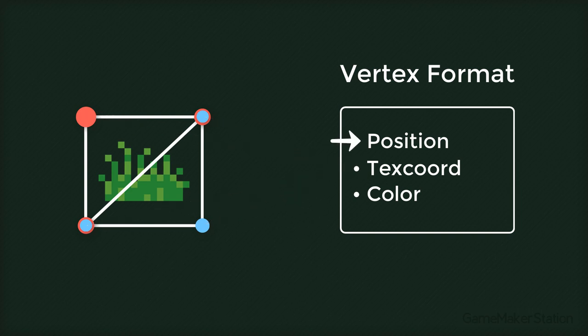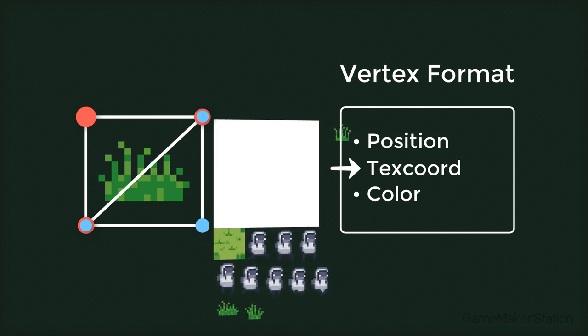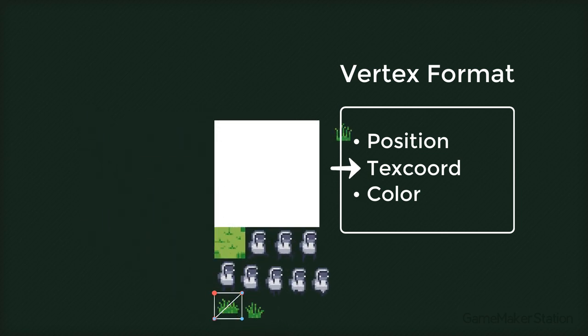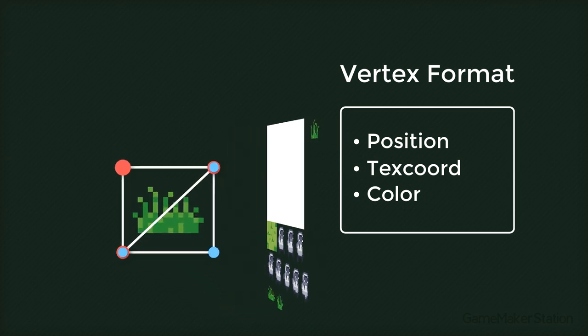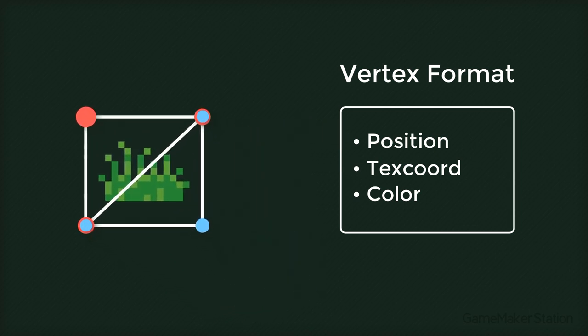This is the position where the vertex will be drawn. This is the texture coordinates. And this will define the color and the alpha of the vertex. With the texture coordinates, the vertices will be mapped on the texture page, and this is how the image will be drawn.